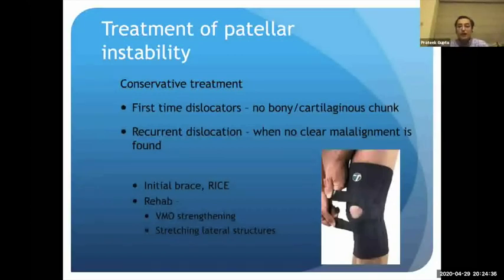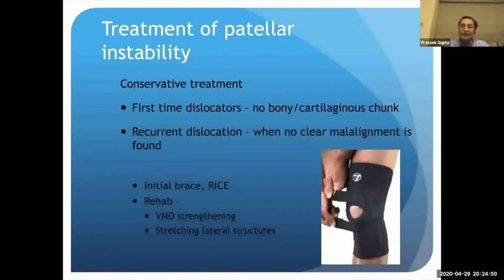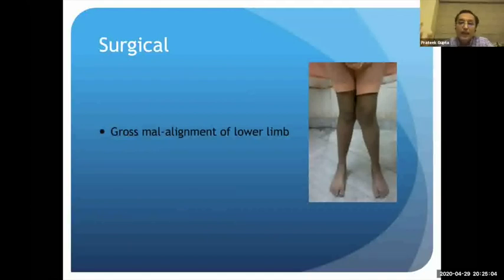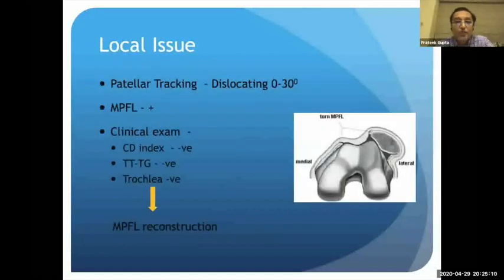Regarding management, acute patellar dislocations are initially managed with RICE. The caveat is if X-ray shows a bony spicule or MRI shows a large cartilage chunk, that indicates arthroscopy to fix the osteochondral fragment back into place. For patellofemoral instability treatment, external malalignment — limb torsion or genu varus/valgus — must be corrected first, before addressing knee joint pathology.